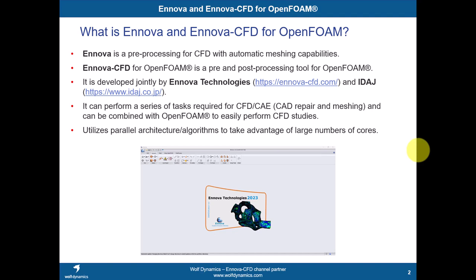Innova is a pre-processing tool for CFD with automatic meshing capabilities. Having something fully automatic is quite tricky and difficult, though not impossible. We also have Innova CFD, which is pretty much the same technology as Innova but with a GUI for setting up cases in OpenFOAM, including pre and post-processing. It can make your workflow much easier.